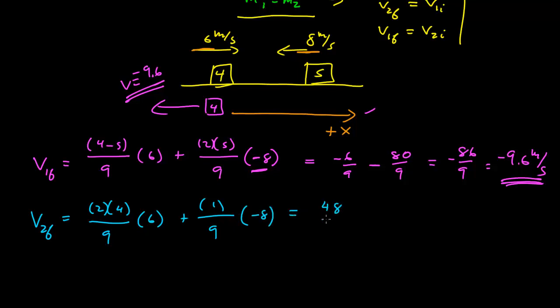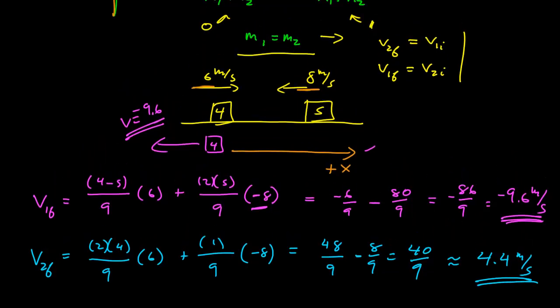So this is, let's call that 48 ninths, positive 48 ninths is the first term, minus 8 ninths is equal to 40 ninths, or approximately 4.4 meters per second. So the larger mass is now traveling in the positive x direction at a lower speed than either particle had initially, while the lighter mass rebounded with a larger speed than either of the masses had initially.